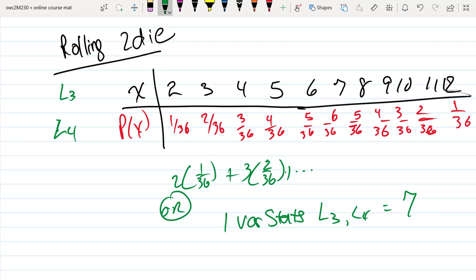So the expected value of the random event X, where X is the sum, is a seven.